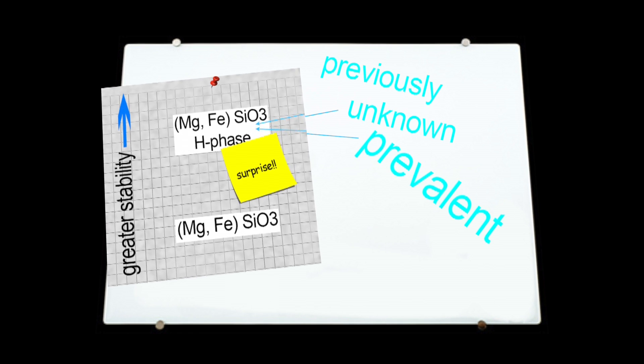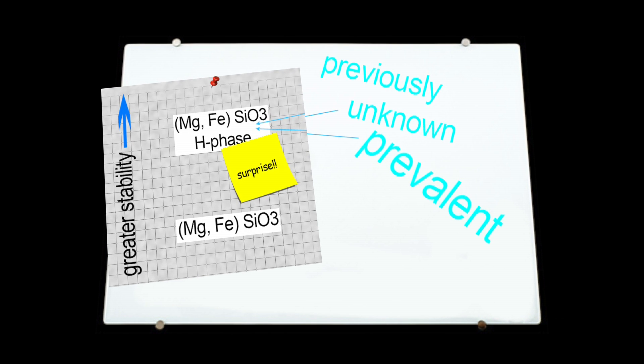Experiments confirm that this iron-rich H-phase is more stable than iron-bearing perovskite, much to everyone's surprise. This means it's likely a prevalent and previously unknown species in the lower mantle. This may change our understanding of the deep earth.